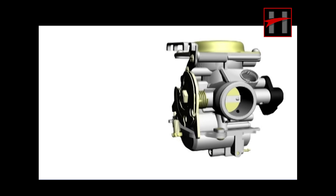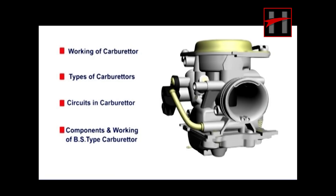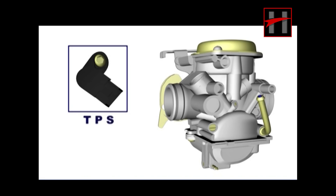In this training module, you will learn about the working of a carburetor, types of carburetors, circuits in a carburetor, components, and working of BS type carburetors. A TPS is used in BS carburetor to achieve smooth throttle response, optimized fuel economy, and better feel of power.